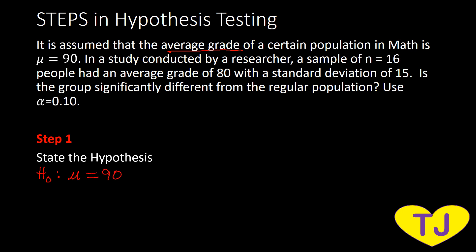And then the alternative hypothesis — since we are testing whether the group is significantly different from the regular population, that means we have H₁: μ ≠ 90. So that will be our hypothesis.